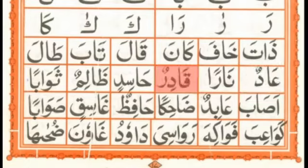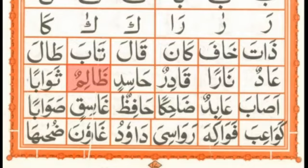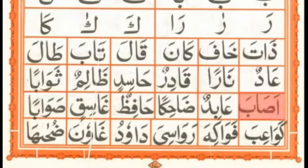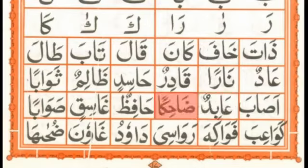مزید مثالیں: عَادَن، نَارًا، قَادِرًا، حَاسِدًا، غَالِمًا — یہ حروف مستعلیہ میں سے ہیں، انہیں موٹا پڑھیں گے۔ تَوَّابًا — اب یہاں آپ کے پاس الف خالی ہے اور واؤ پہ زبر ہے تو اسے two counts پڑھیں گے۔ تَوَّابًا، عَابِدًا — منہ پورا اوپر کی طرف کھولیں گے، ناک میں آواز نہیں جانی چاہیے۔